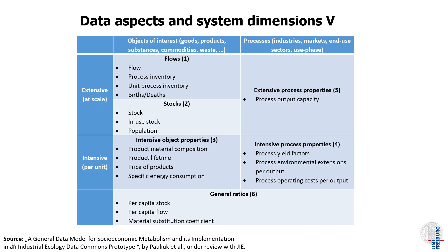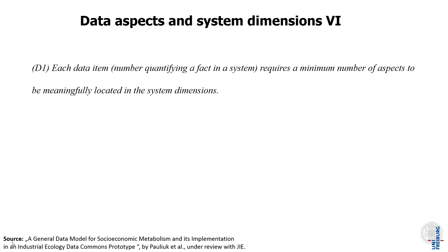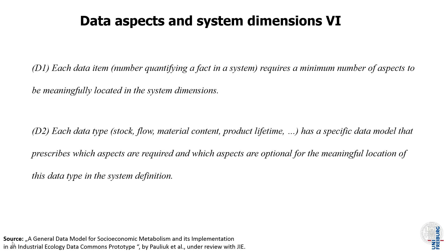To make this more formal, we define the data model for socioeconomic metabolism. This is taken from a journal paper currently under review with the Journal of Industrial Ecology. The key message is that each data item — a number quantifying an effect in a system — requires a minimum number of aspects to be meaningfully located in the system dimensions. Each data type, whether stock, flow, material content, and so on, has a specific data model specifying which aspects are required and which are optional.